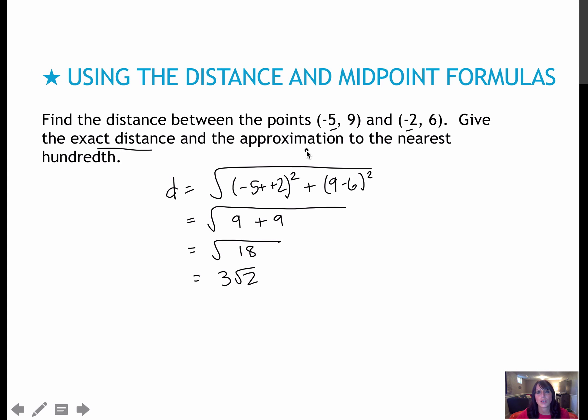An exact distance would be 3 radical 2. The approximation means use your calculator, take the square root of 2, multiply that times 3. An approximation of the distance would be 4.24, and again, there's really no label other than units.